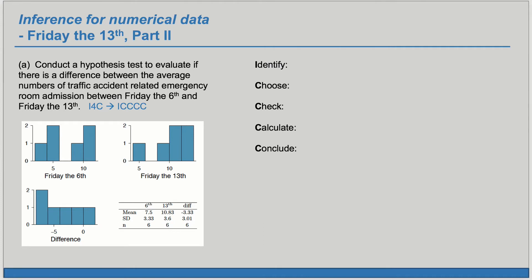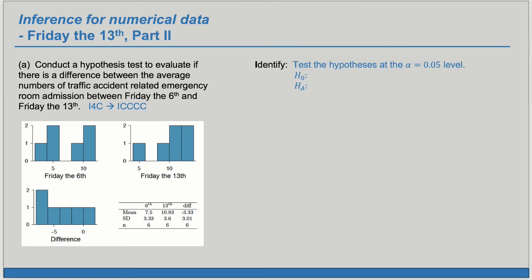In order to structure our response, we're going to use the I-4C framework that stands for Identify, Choose, Check, Calculate, and Conclude. First, we want to identify the hypotheses and we'll test those at the alpha equals 5% significance level.